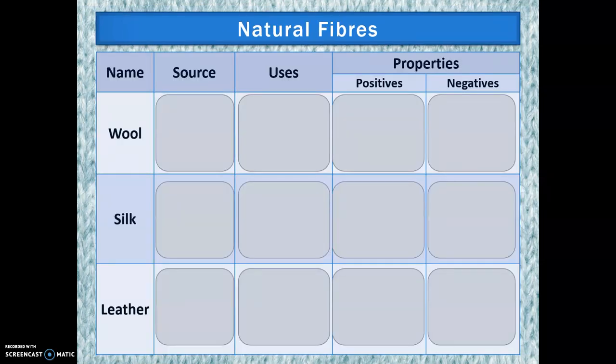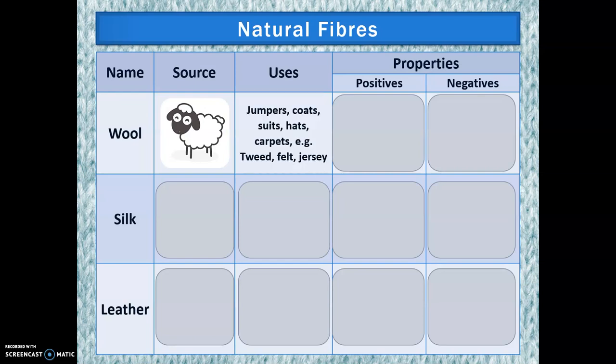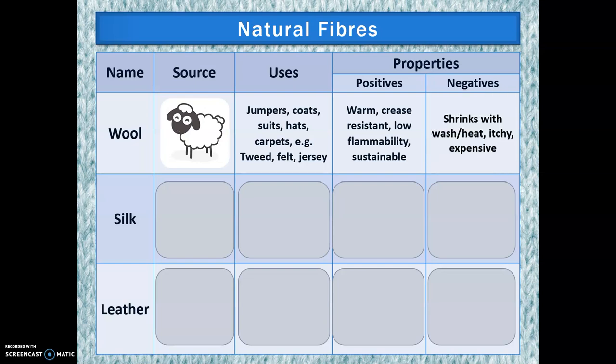Let's go through some natural fibres — we've got five to learn. The first is wool, which tends to come from sheep, but you can get it from alpacas, even from rabbits. It's used for jumpers, coats, wool suits, hats, carpets, tweed, felt and jersey. It's really warm, crease resistant, has low flammability, and because it comes from an animal, it is sustainable. However, it does shrink with heat after washing, it can be quite itchy, and it is expensive.